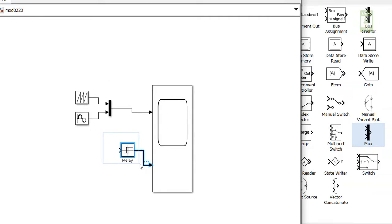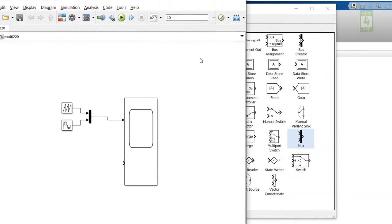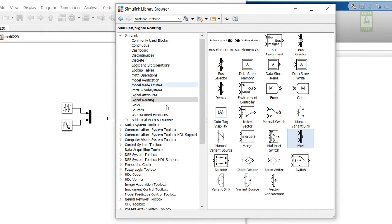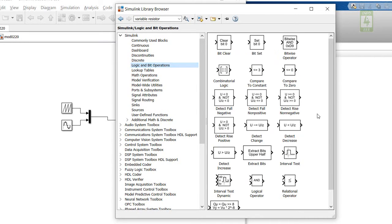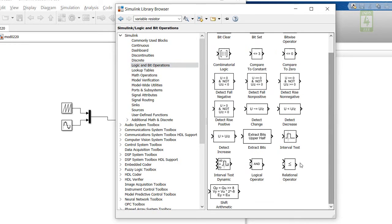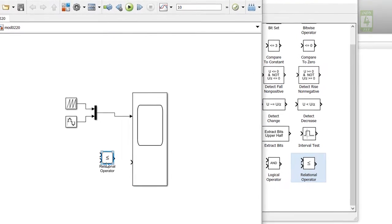Now delete this relay block from here. Now go to Simulink library browser and go to logic and bit operation and identify relational operator block. It is available here. Just drag it into your simulation file.